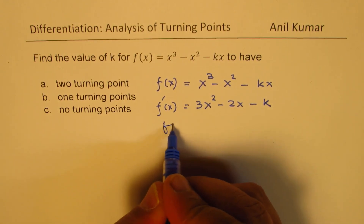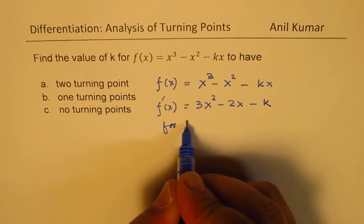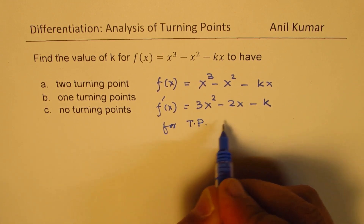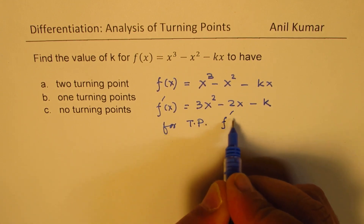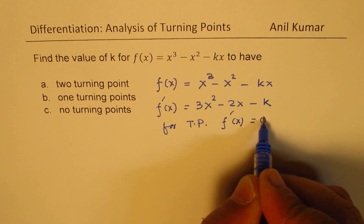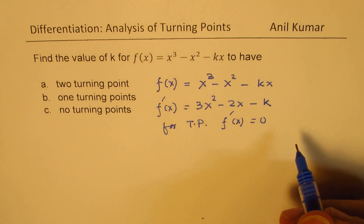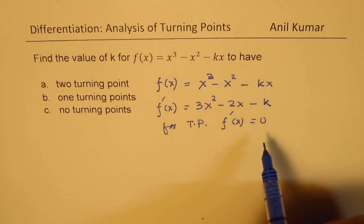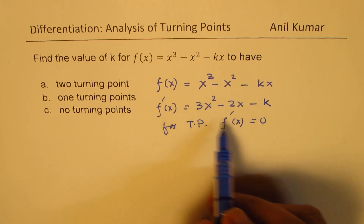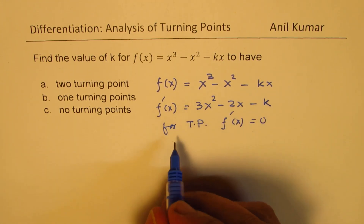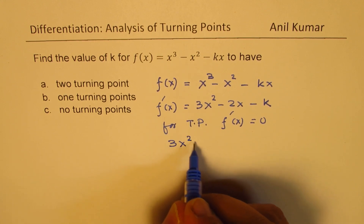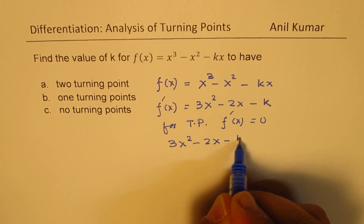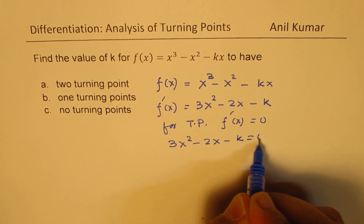Now, for turning points, f'(x) should be equal to zero in the case of a polynomial. So, equating this to zero, we get 3x² - 2x - k = 0.